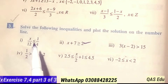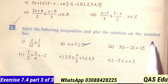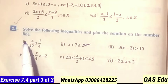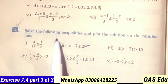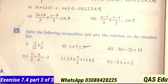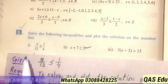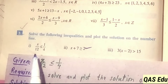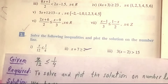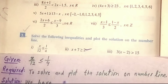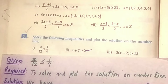Question number 3. We will solve the following inequalities and plot the solution on the number line. Part 1: x over 12 is less than or equal to 1 over 4. We will solve the problem and plot the solution on the number line.